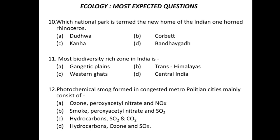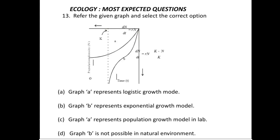Question 12: photochemical smog formed in congested metropolitan cities mainly consists of — ozone, peroxyacetyl nitrate (PAN), and oxides of nitrogen (NOx) are listed in option B. Options C and D are also provided. Remember the correct option for the composition of photochemical smog.